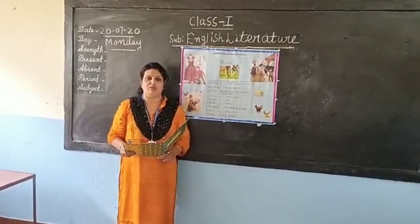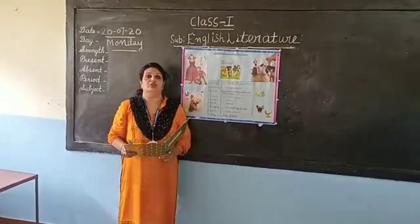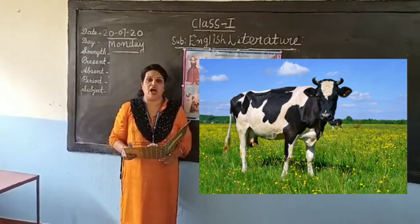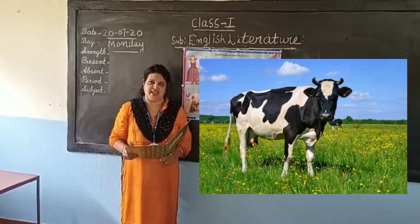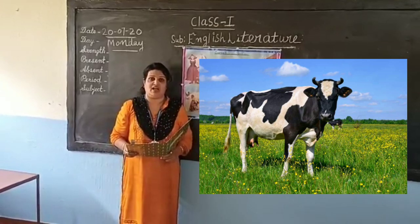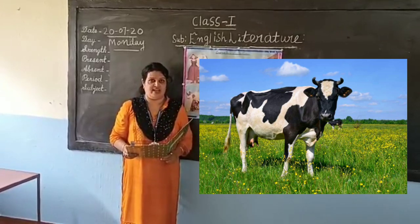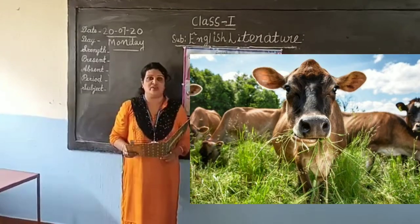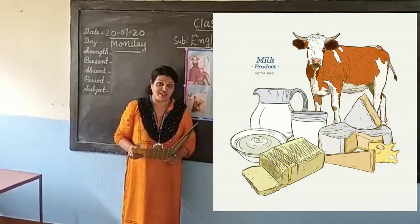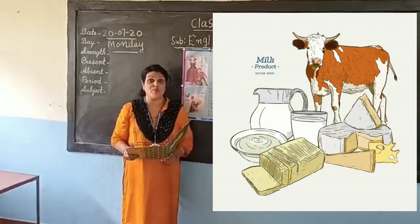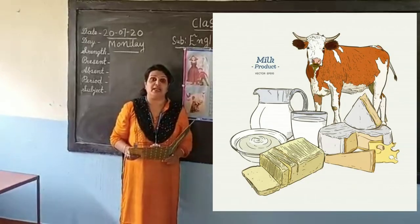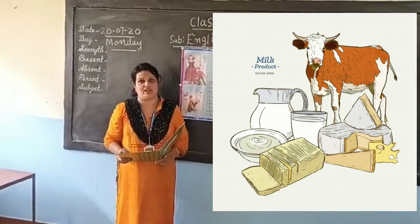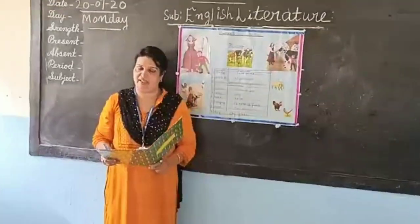So students, I am going to say some sentences about a cow. The cow is a domestic animal. The cow has a large body. The cow eats grass. The cow's milk is used to make cheese, butter, curd, ghee, etc.